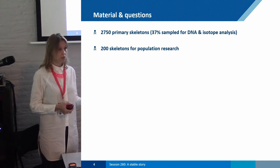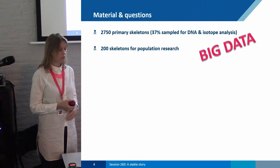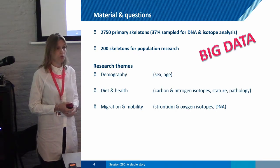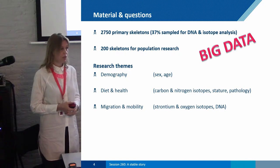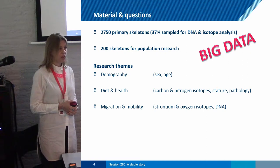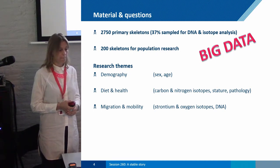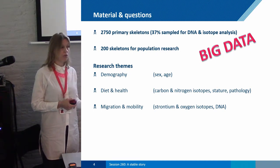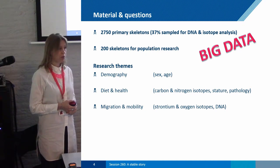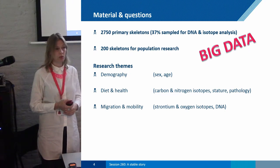Within the budget, we defined several themes we wanted to address: basic demography by looking at sex and age distribution; diet and health by means of carbon and nitrogen isotopes, stature, and pathology; and migration and mobility by addressing strontium and oxygen isotopes and DNA.